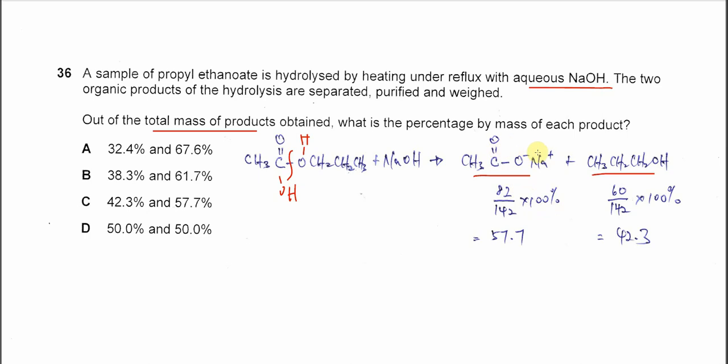The mass for this sodium ethanoate is 82. The propanol is 60. The total mass of the product is 142.